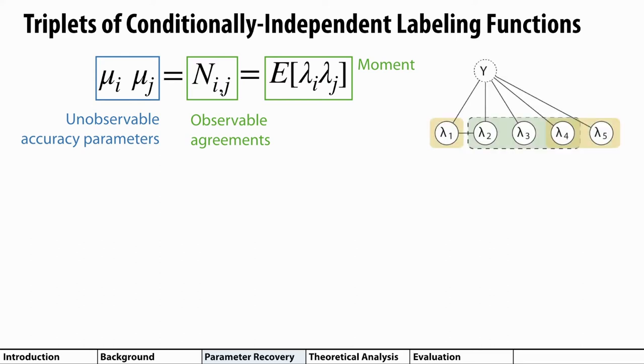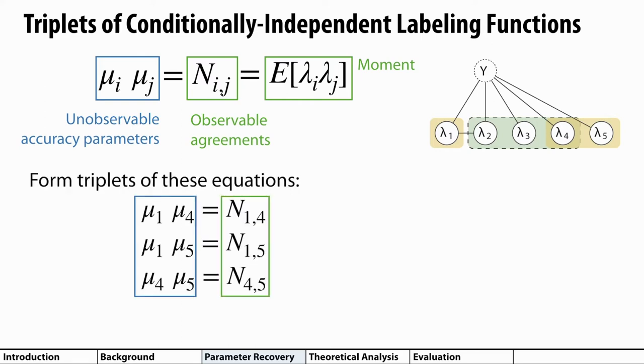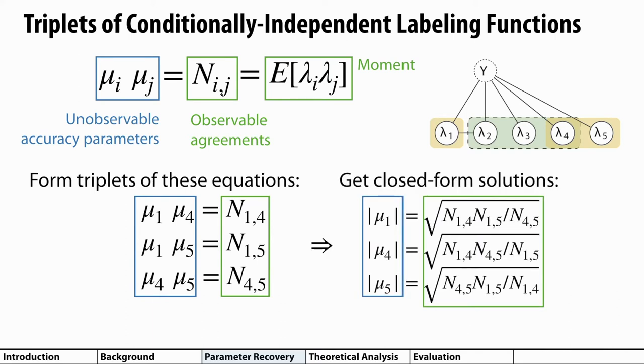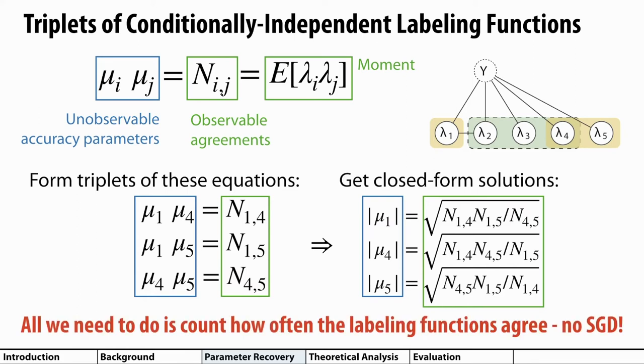The only thing we need to do to recover the parameters of the labeling functions from these moment equations is to find triplets of variables where the property holds. And two such triplets are highlighted in yellow and green here. Then we can form a system of equations of three equations with three unknowns and solve for the accuracy parameters directly. All we need to do is count how often the labeling functions agree without optimizing a black box loss function. In practice, this is so fast that we can actually do this calculation for all possible valid triplets and just take a median of the resulting calculations.